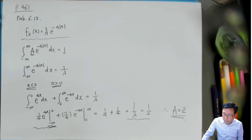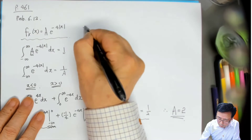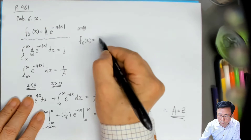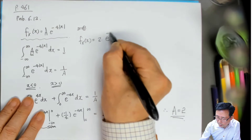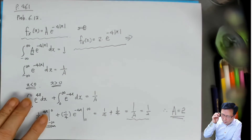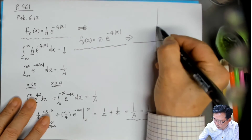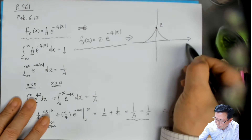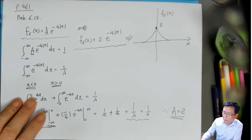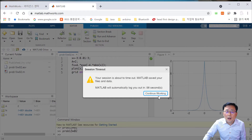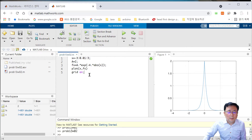a가 2가 된다는 것을 알 수 있어요. 그러면 확률밀도함수 f(x) = 2 · 2^(-4|x|)이 됩니다. 이것의 그래프를 그려보면 x = 0일 때 값이 2가 되고, x값에 따라 f(x)는 이렇게 됩니다. 정말 이렇게 되는가 제가 한번 MATLAB으로 그려봤거든요. 그려보면 이렇게 됩니다. 제가 수업을 준비하기 위해서 먼저 MATLAB으로 코드를 넣어 가지고서 그림을 그려보니까 이와 같이 됩니다.